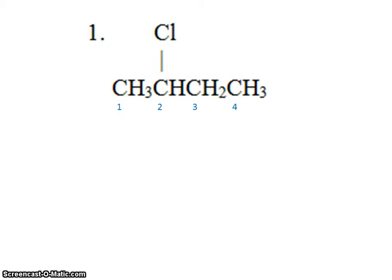Now a parent chain which has 4 carbons is called butane. But you'll notice that this substituent chlorine is located on the second carbon. So the name of this molecule would be 2-chlorobutane.